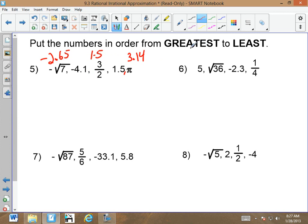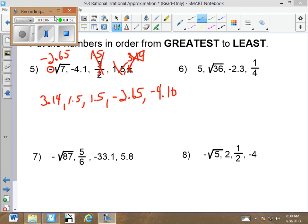So, I want the biggest. Which one's the largest? $3.14. Cross that out. Now, what comes next? $1.50. I have two of them. 1.5. 1.5. Now, what's larger? Negative $2.65 or negative $4.10? Negative $2.65 is larger than negative $4.10. Remember, the larger the negative number, the smaller the value. The negative closest to zero is bigger.